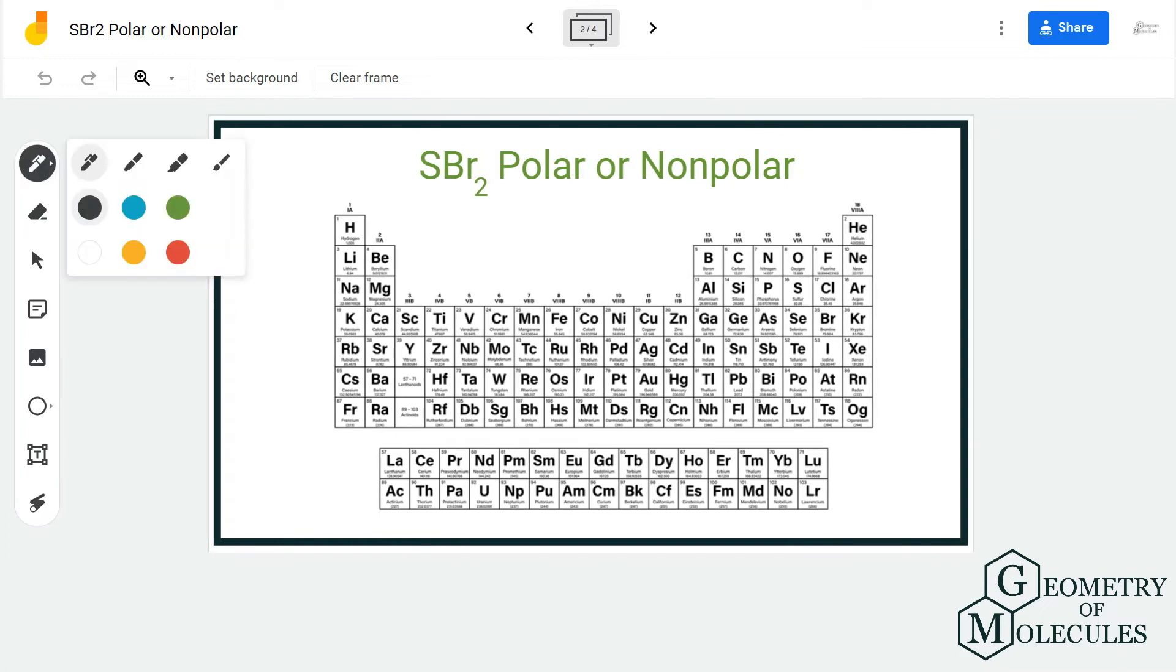If you look at the periodic table, sulfur atom has an electronegativity value of 2.58 whereas for bromine it is 2.96. If you calculate these differences, it is less than 0.5, which means that these bonds are not polar.